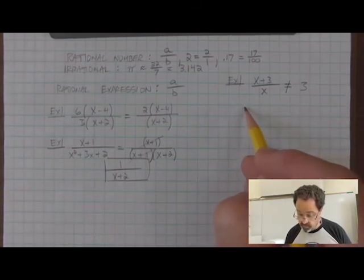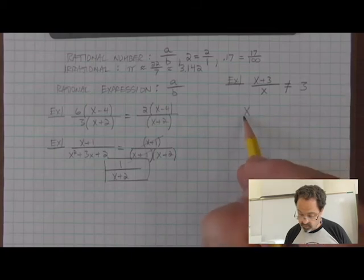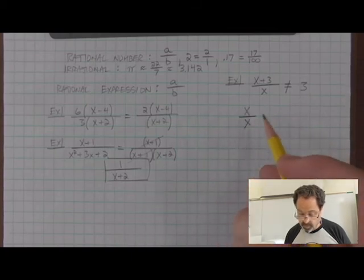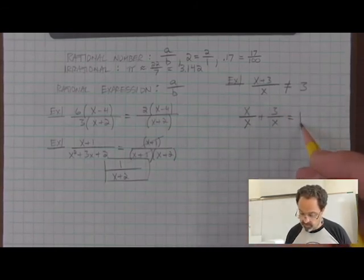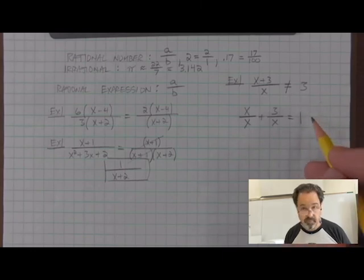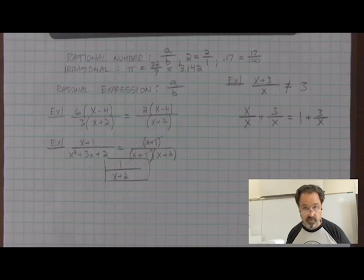So to proceed, we could write this as the x in the numerator divided by x plus the three in the numerator also divided by x. And this x over x becomes one. Something over itself is one. And we still have the three over x, which doesn't simplify.